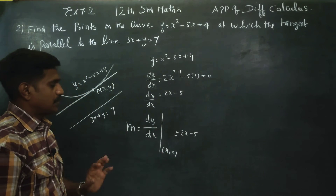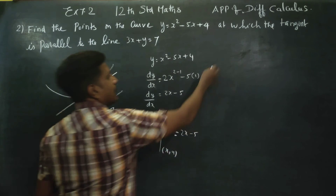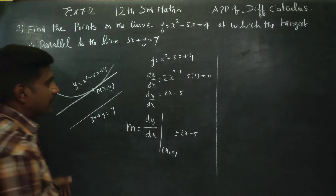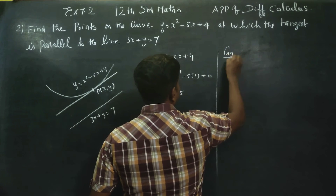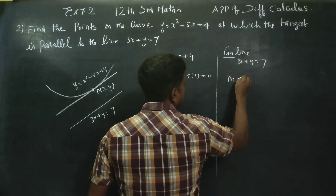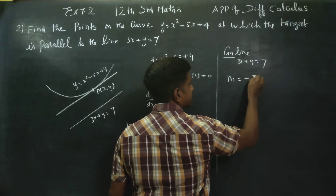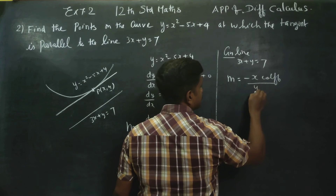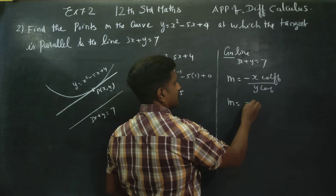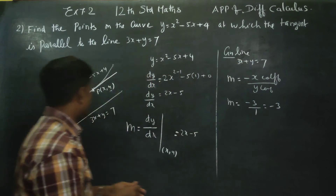This is the slope of the tangent. Since the tangent is parallel to the given line, we find the slope of the given line. Given line: 3x plus y is equal to 7. Using the slope formula from 10th standard — minus of x coefficient divided by y coefficient — slope equals minus 3 divided by 1, which is minus 3. This is the slope of the line.